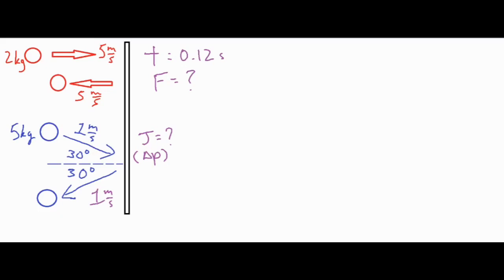When looking at a question dealing with momentum, impulse, and bouncing, the key thing is direction. In my picture, anything to the right is positive, anything to the left is negative, everything up is positive, and everything down is negative. It's really important to label your picture properly with positive or negative signs, as that's one of the big determining factors in getting the correct solution. I'll label the initial velocity as positive going right and the reflected velocity as negative going left.